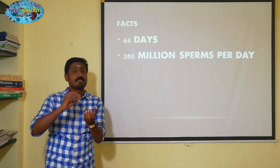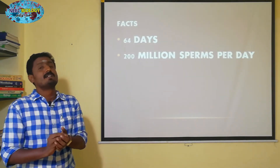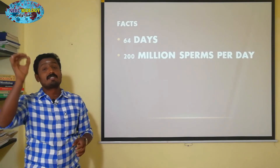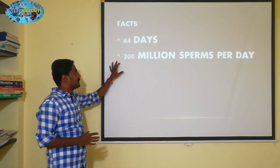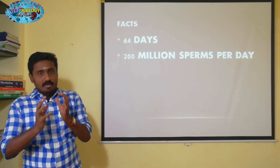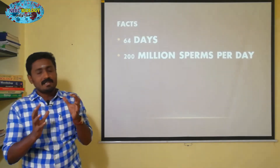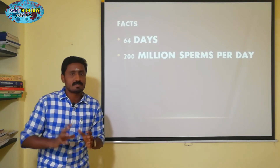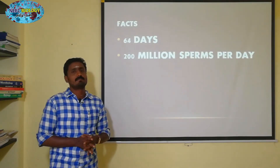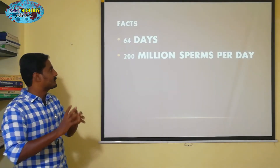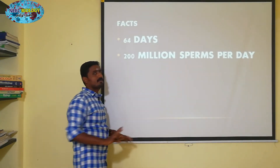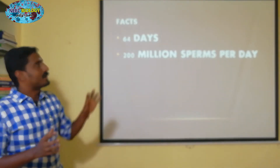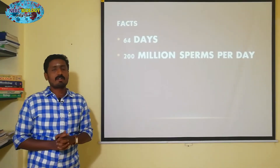In the seminiferous tubules there are many different sperm cells. If there is a male, there are many different sperm cells in the seminiferous tubules. We are producing 200 million sperm at a time. These are the facts in your book.